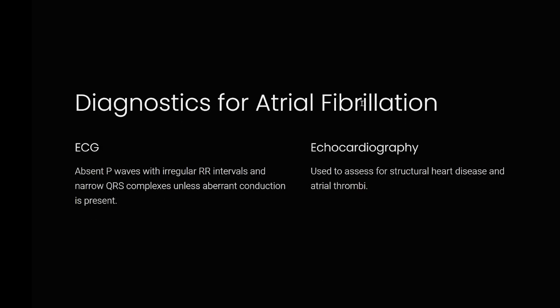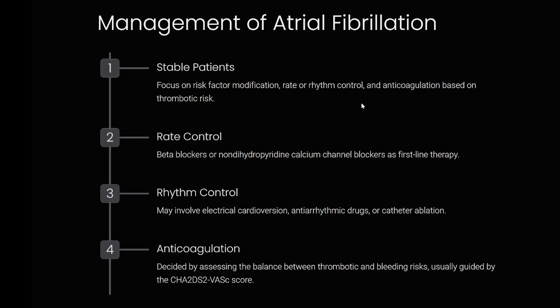Diagnostics: ECG shows absent P waves with irregular RR intervals and narrow QRS complexes unless aberrant conduction is present. Echocardiography is used to assess for structural heart disease and atrial thrombi. Management of stable patients focuses on risk factor modification, rate or rhythm control, and anticoagulation based on thrombotic risk. Rate control uses beta blockers or non-dihydropyridine calcium channel blockers as first-line therapy. Anticoagulation is guided by the CHA2DS2-VASc score.